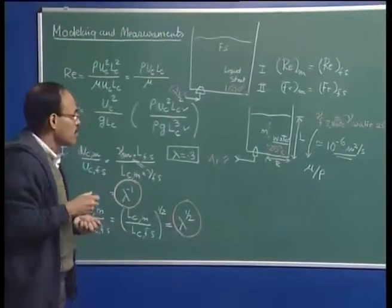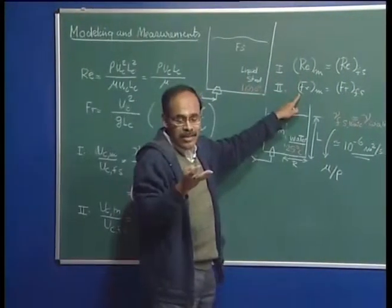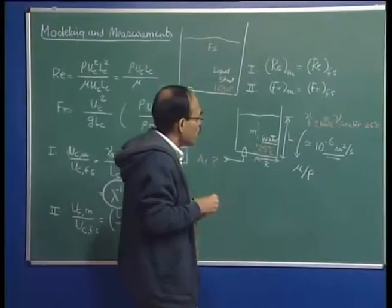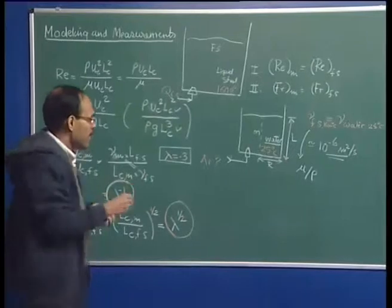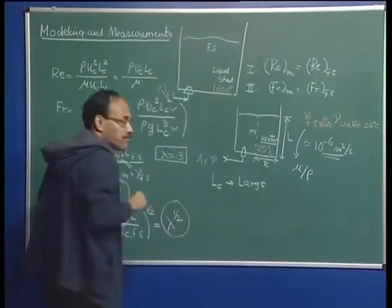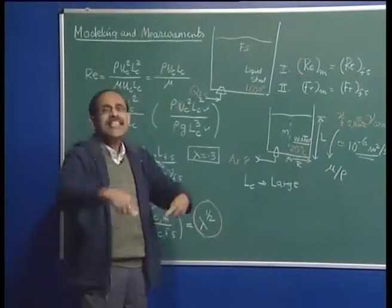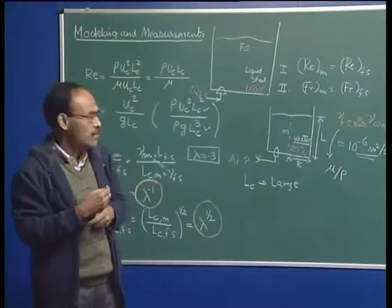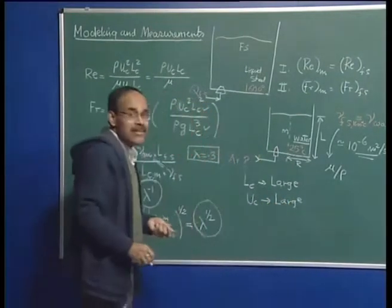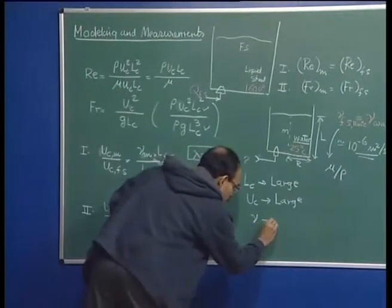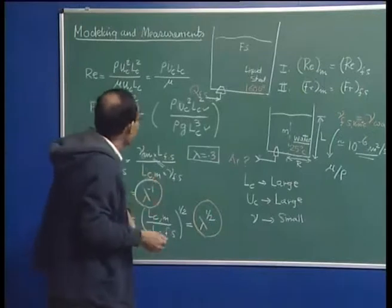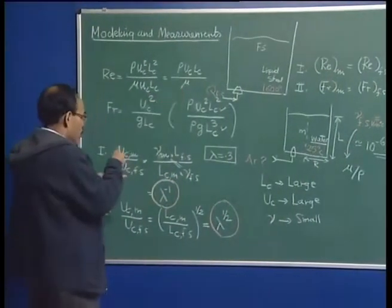In steelmaking systems, the size of the reactor is very large. Similarly, the level of agitation — and hence the velocity — is also very large. The kinematic viscosity of liquid steel is extremely small. So let us look at the order of magnitude of these parameters.